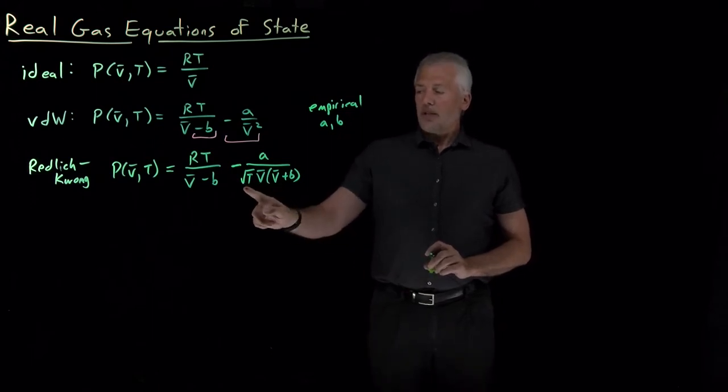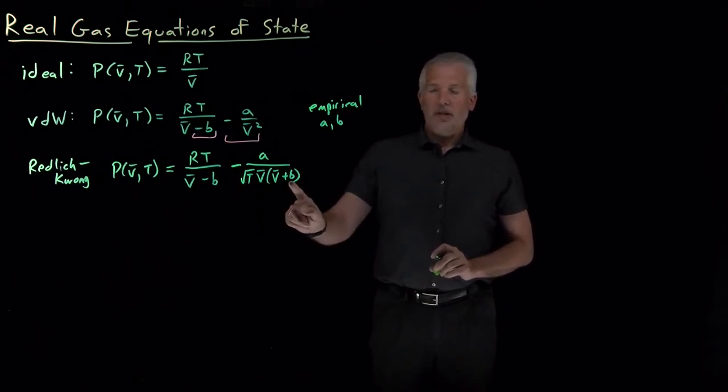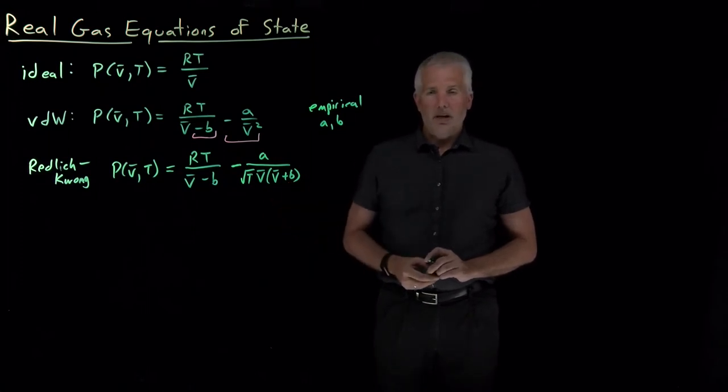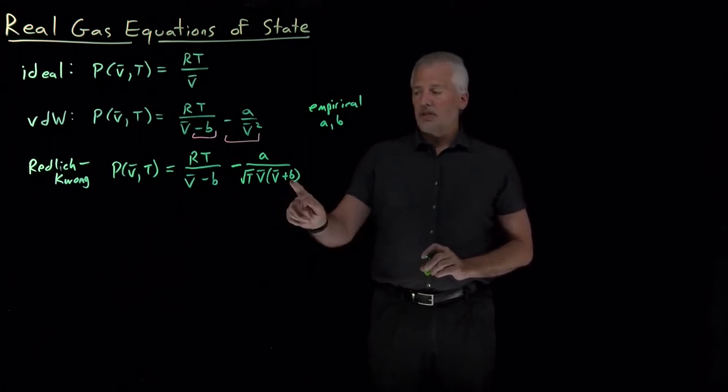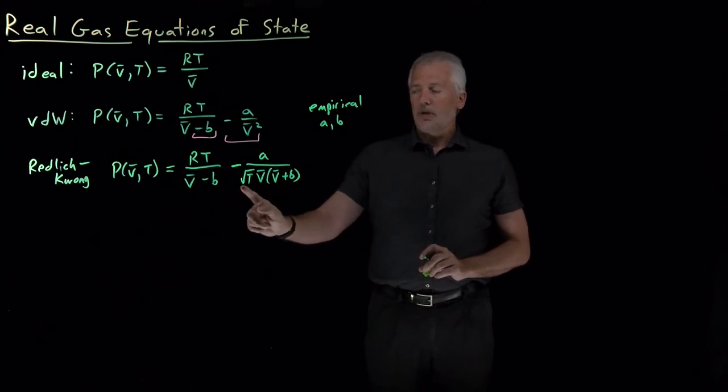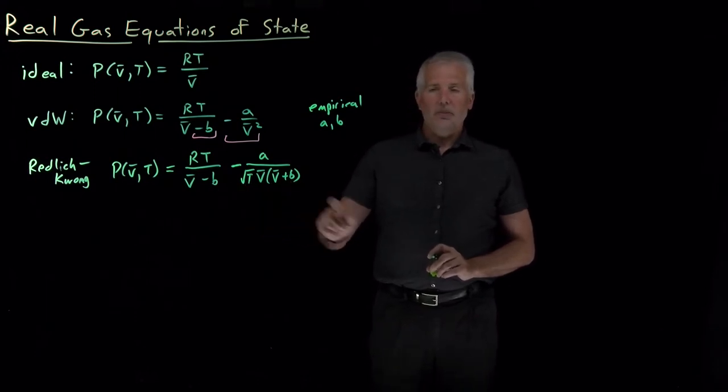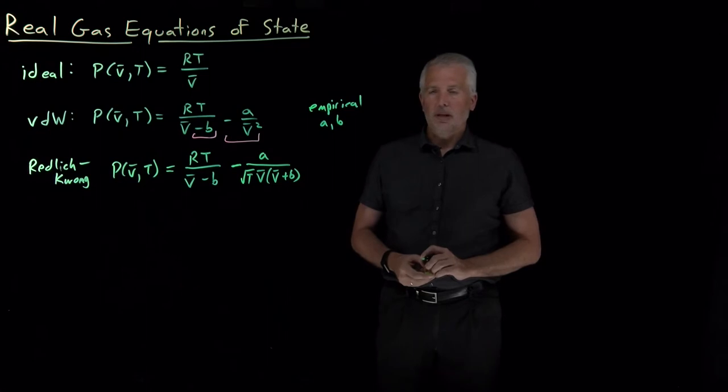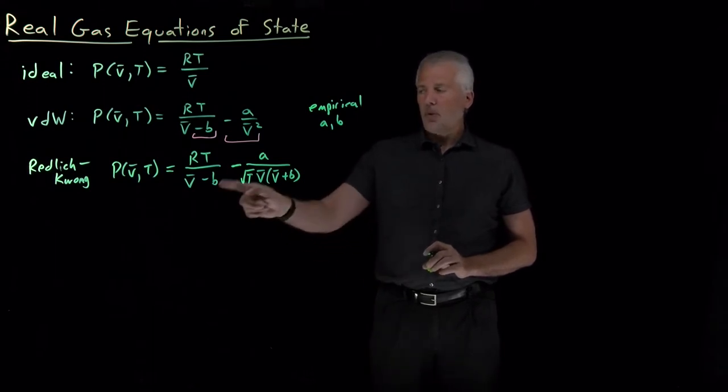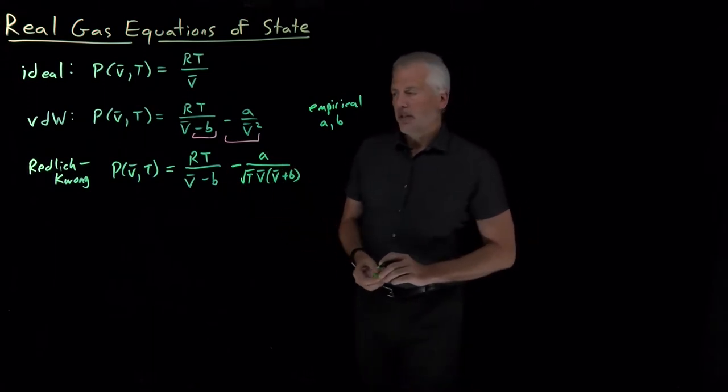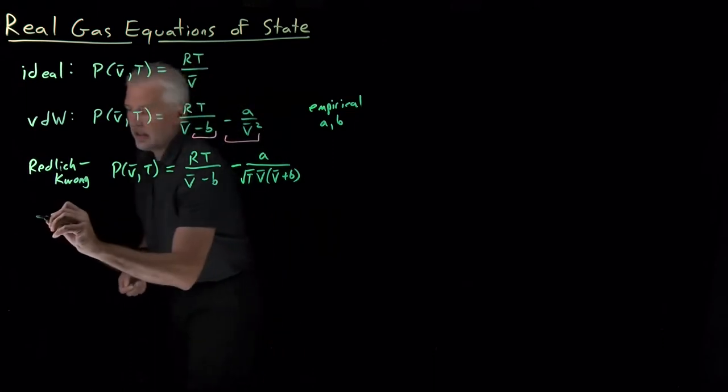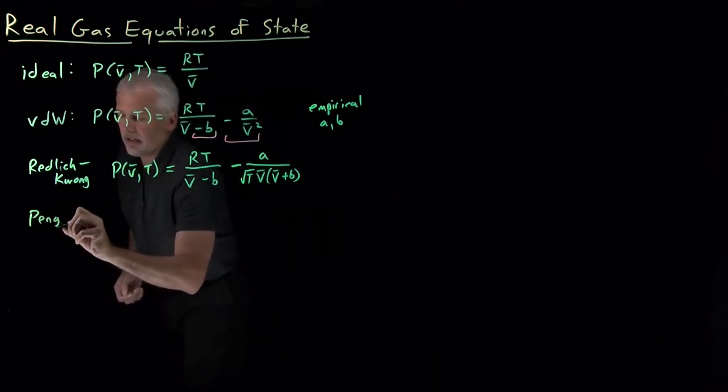So the corrections like introducing square root of T and introducing the B down here, those are done mainly just because they make the answers better, in part because there's some physical reason for including a square root of T or including the volume in this intermolecular interaction term. But once we start making these more accurate models, our main goal is to make them accurate without being as concerned about what the parameters mean. And we can see that a little bit further if we study another model.